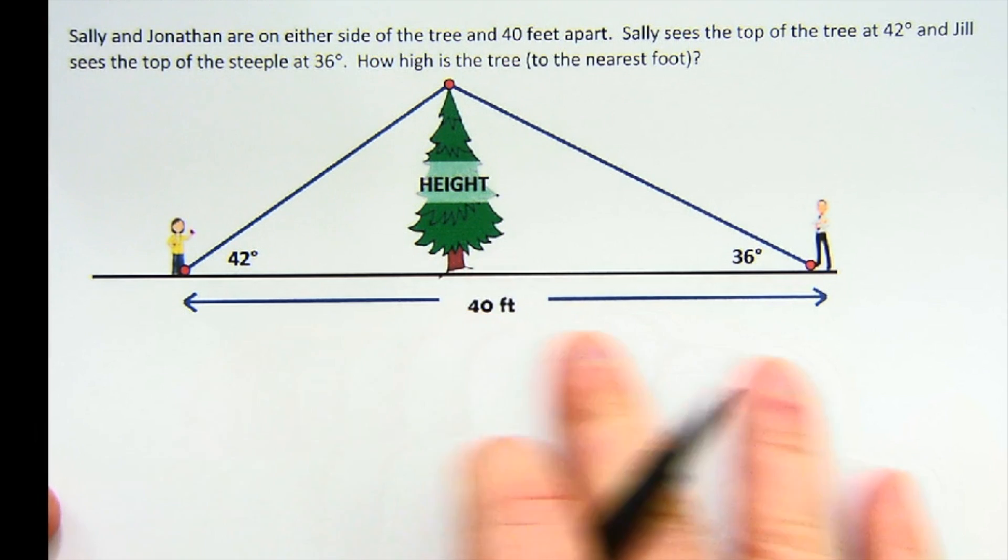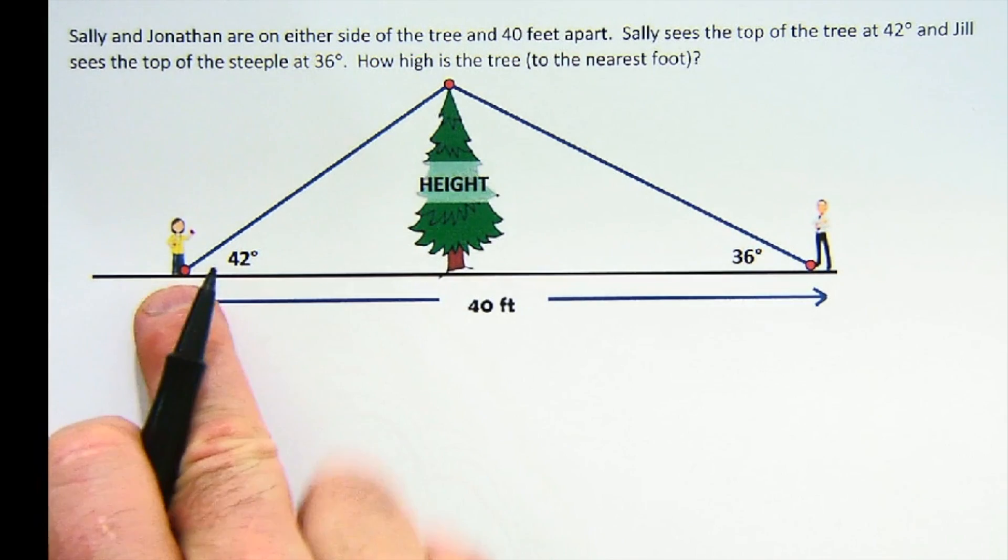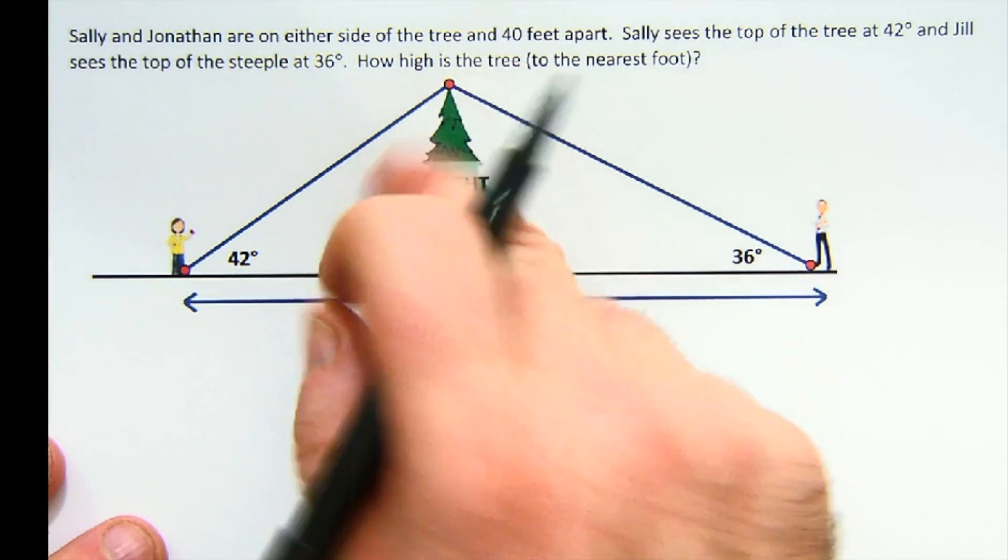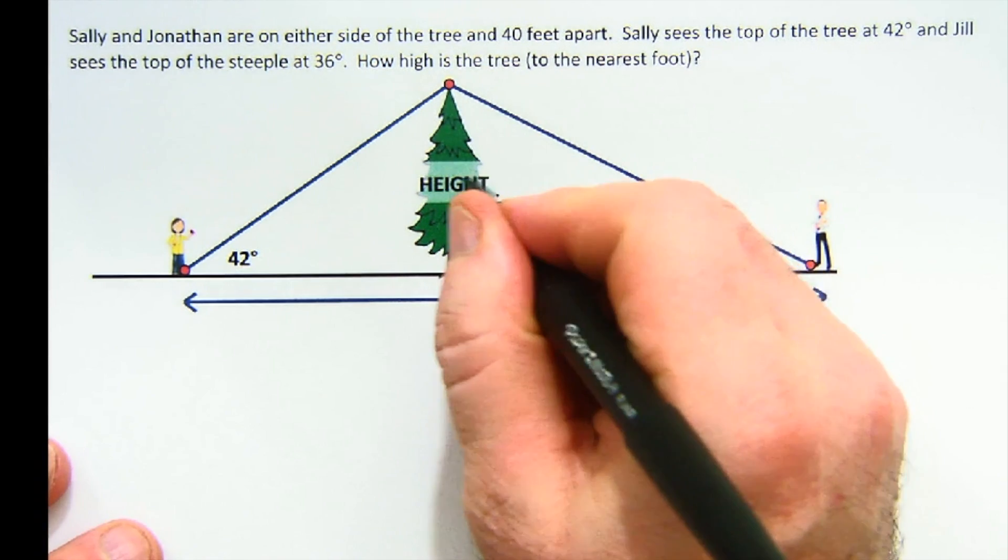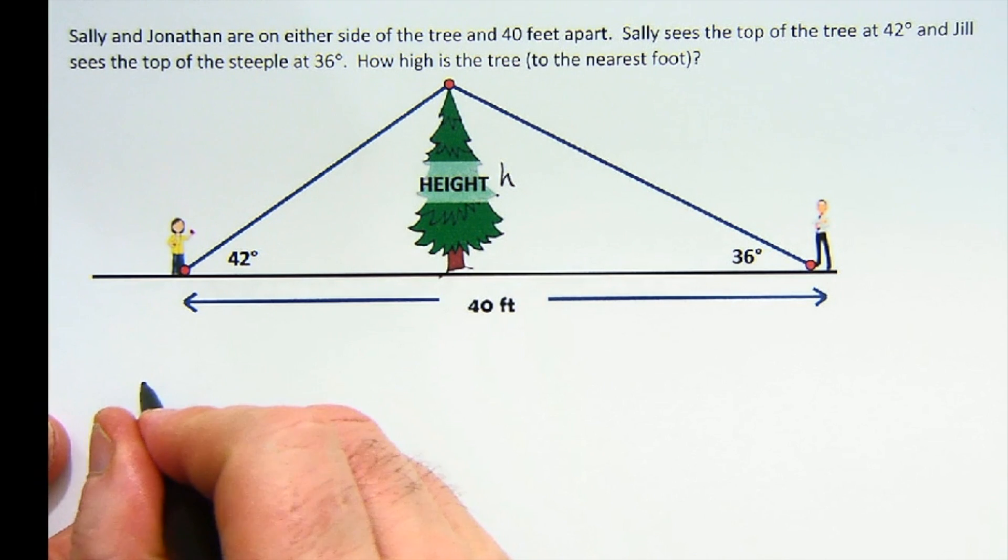Partly what happens here is there's a little bit of missing information. From both sides, this person sees the height of the tree at 42, this one sees the 36, and we want the height. So I'm going to call that h, and I'm just going to set up two relationships.